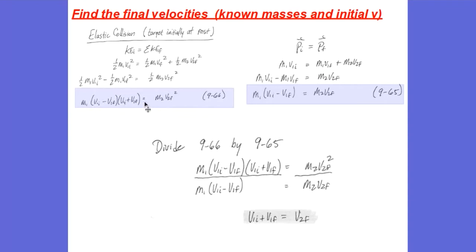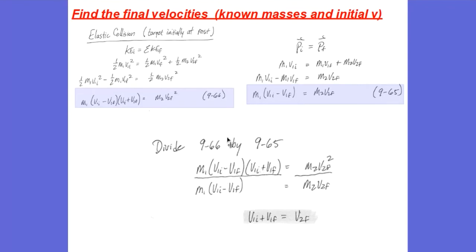Now for the conservation of momentum equation: the momentum is entirely with the first ball, the projectile, before the collision. Then momentum is divided among the two objects after the collision, each with momentum M times V using their final velocities. Moving a term to the other side and factoring out M1, I take these two equations and divide one by the other.